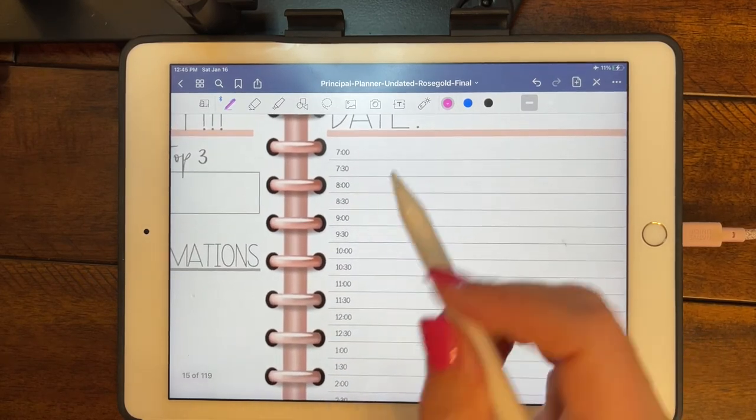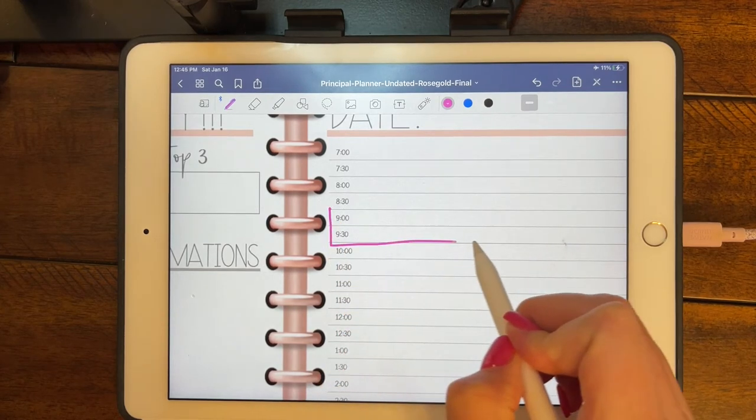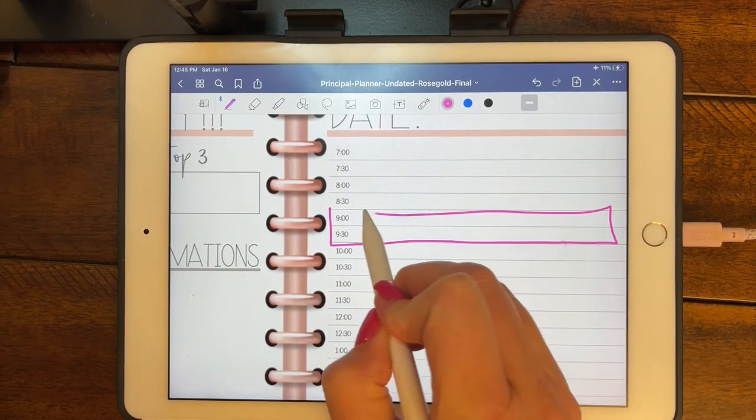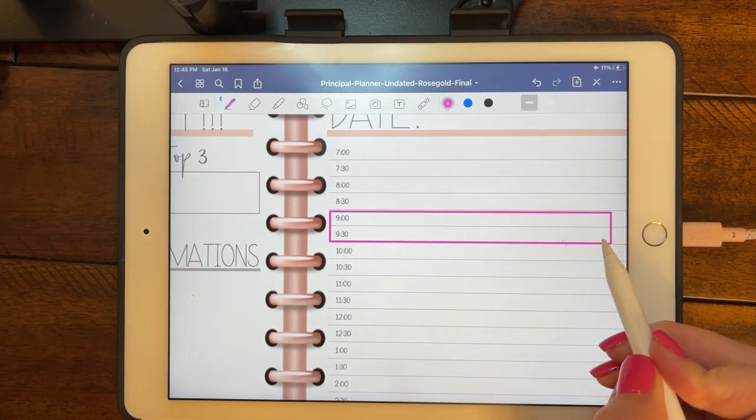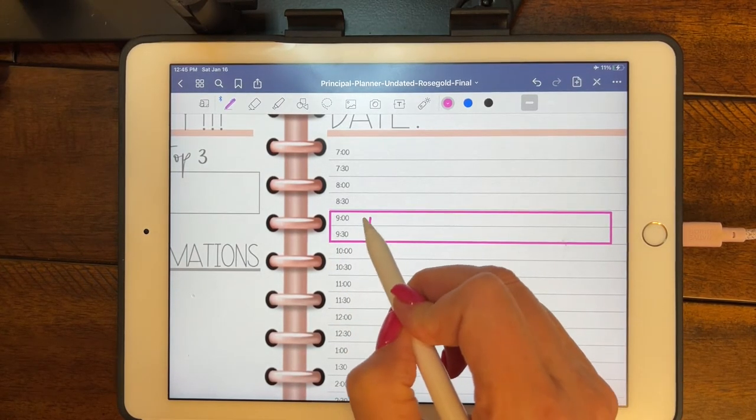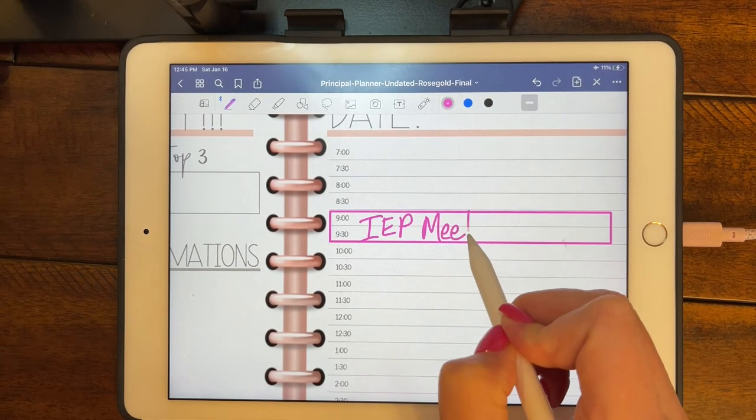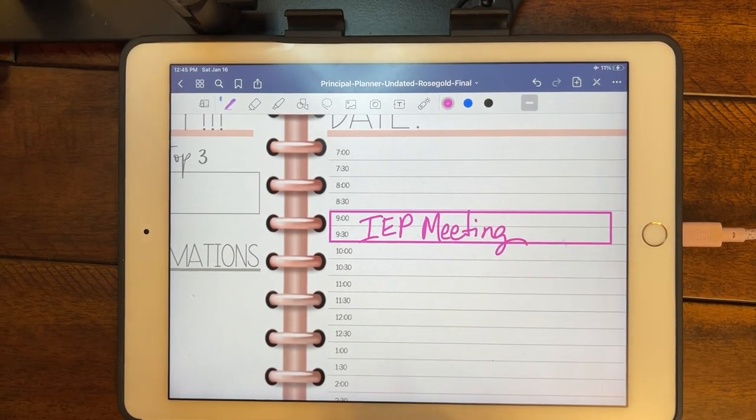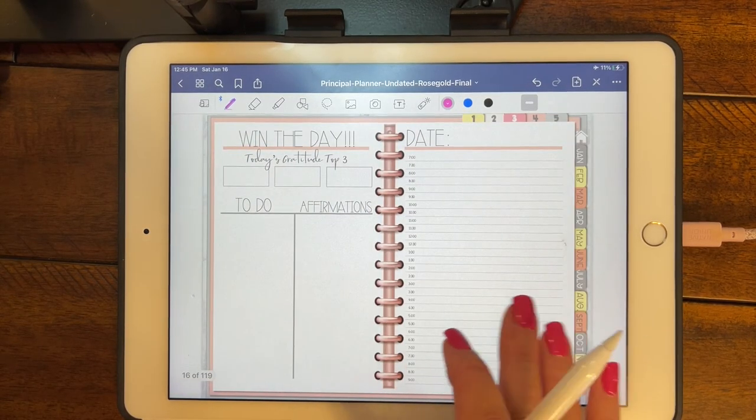This is where you can time block if you would like to. Let's say from 9 to 9:30, and if you hold down it'll make that line for you. Let's say I have an IEP meeting, so I'm going to go ahead and put IEP meeting in there. So that's how you can do that.